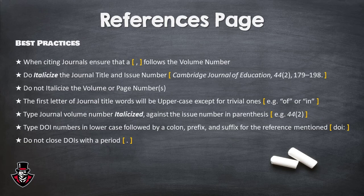When citing journals, ensure that a comma follows the volume number. Do italicize the journal title and issue number. Do not italicize the volume or page numbers. The first letter of journal title words will be uppercase except for trivial ones like 'of' or 'in.' Type the journal volume number italicized against the issue number in parentheses.